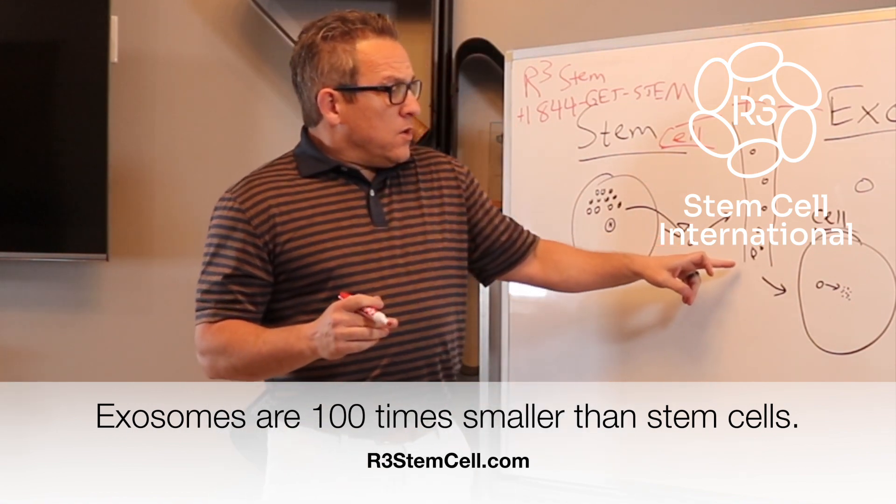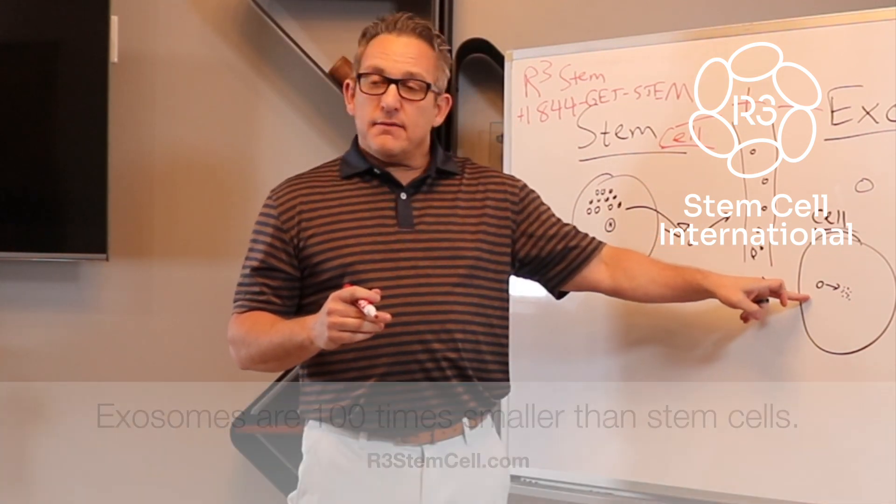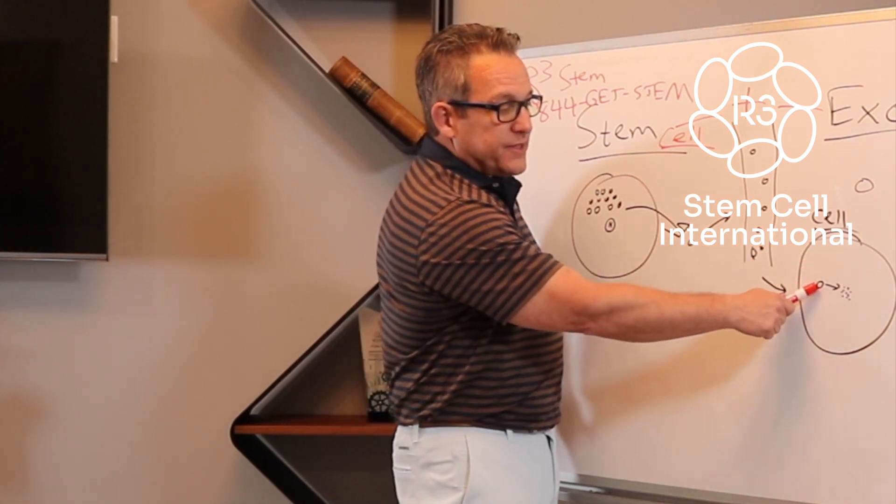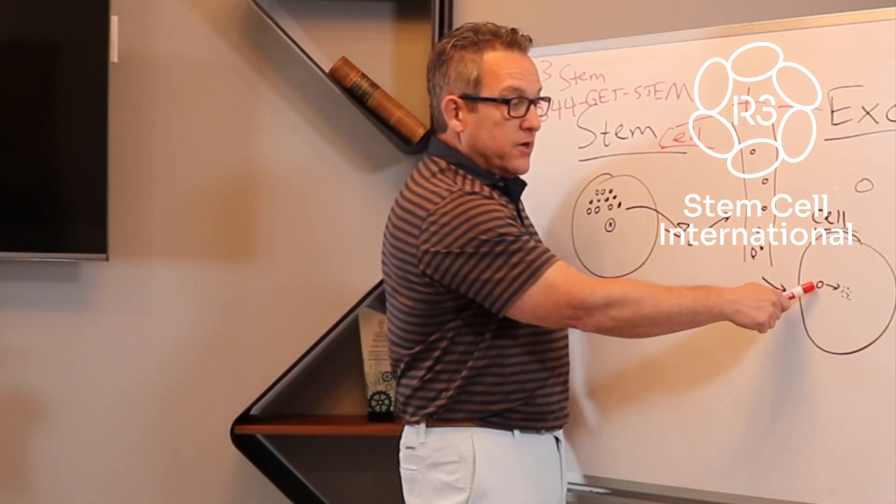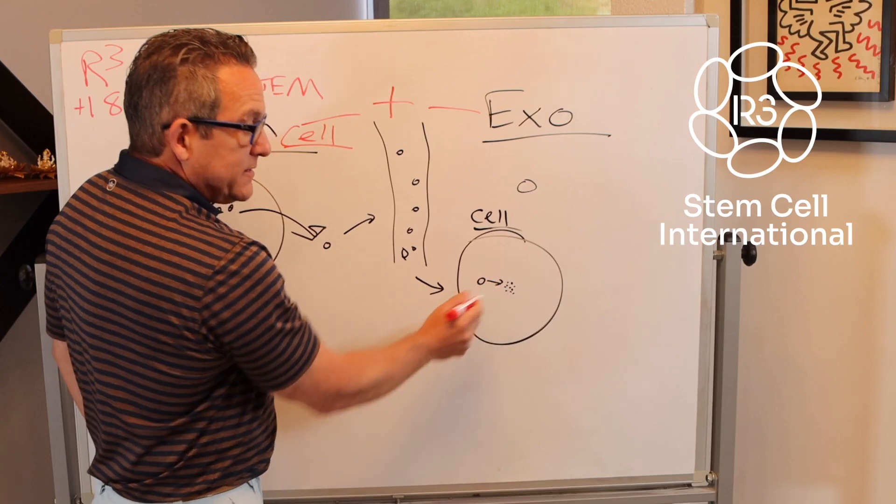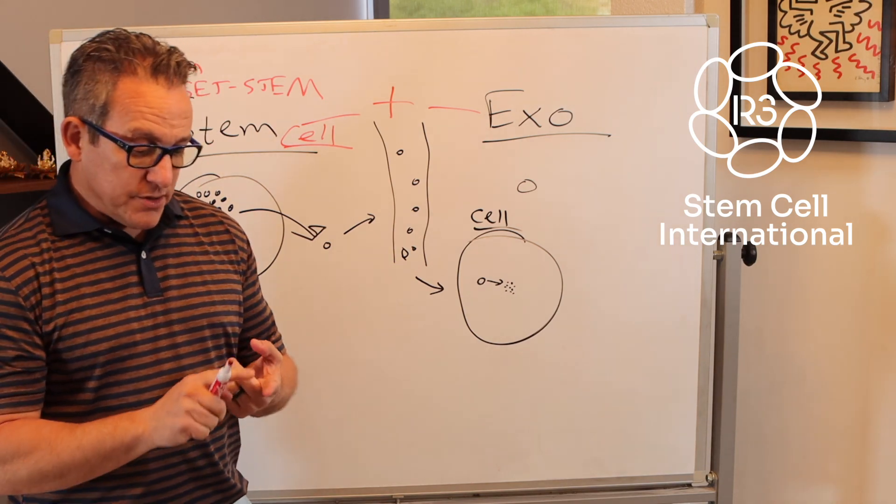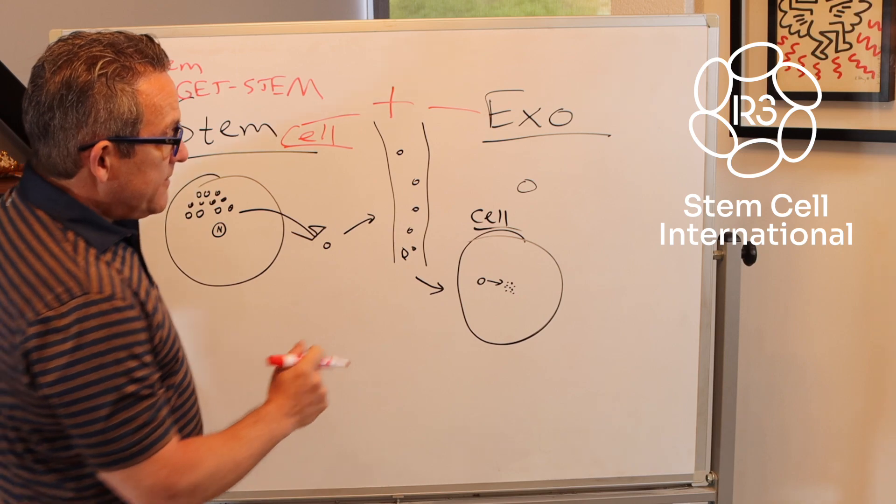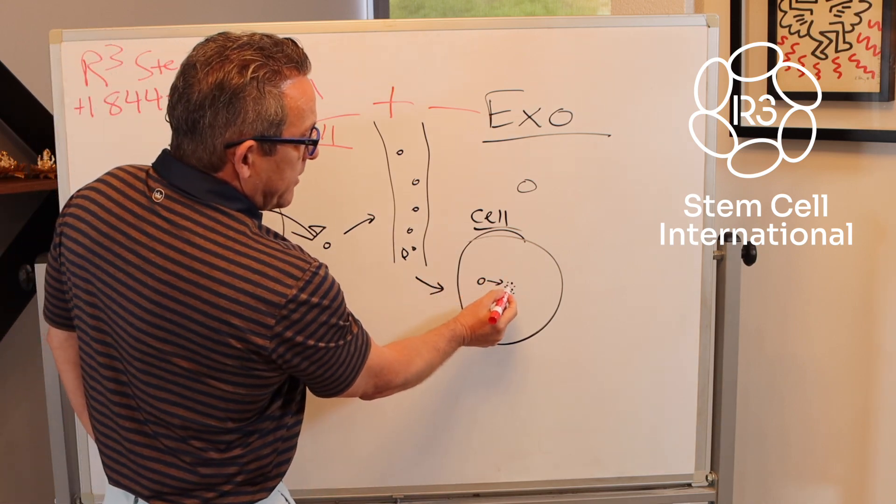So when they get eaten by a cell that has inflammation, they will then release their contents, their payload, if you will. And that's what these little dots are. These little dots are what I mentioned: the cytokines, the growth factors, the nucleic acids, the peptides. And so in essence,